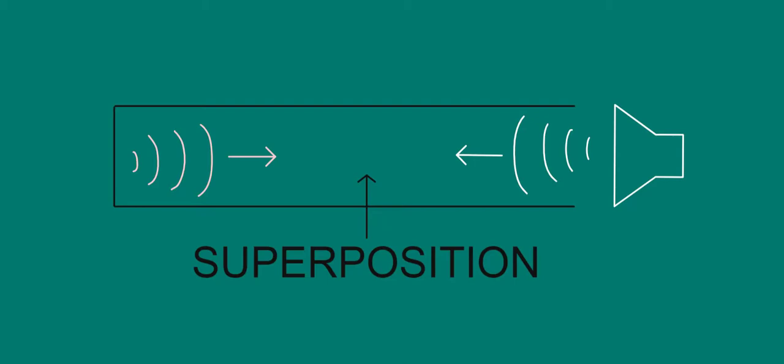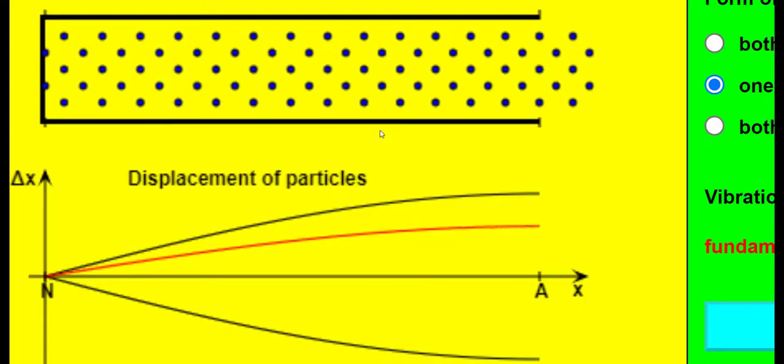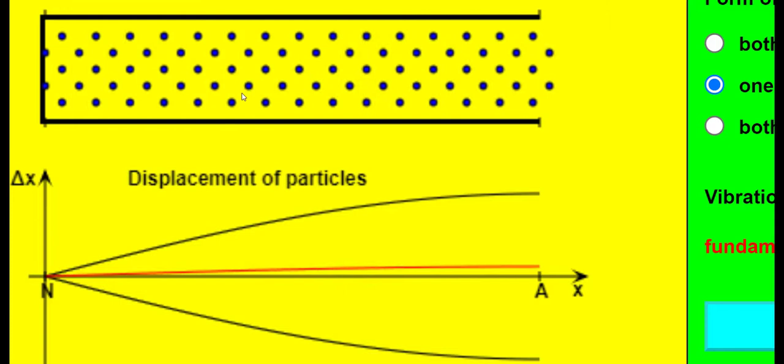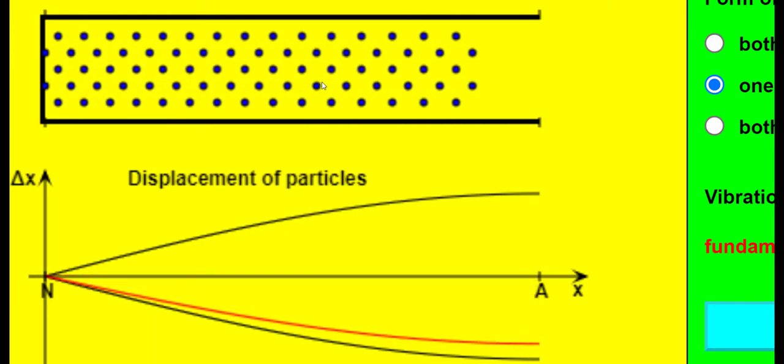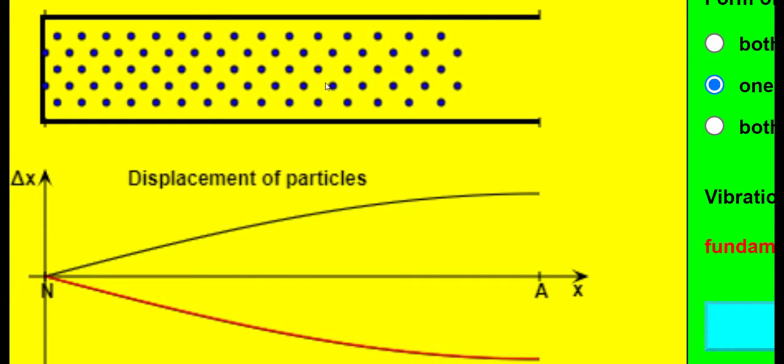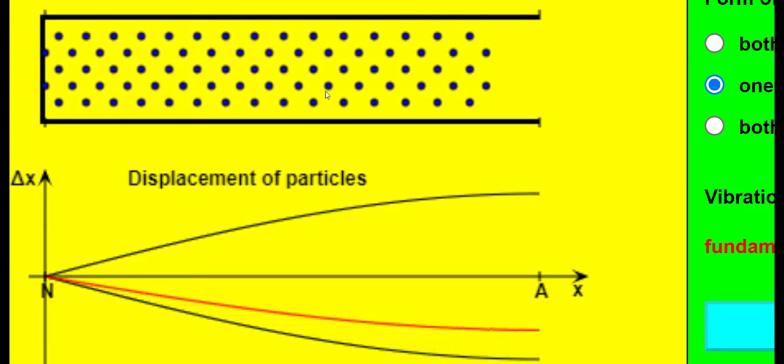We can understand this better with the help of a nice simulation. Here, you can see these blue circles, representing air molecules, oscillating inside this closed tube. What we're seeing here is a stationary wave pattern.